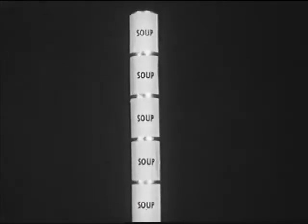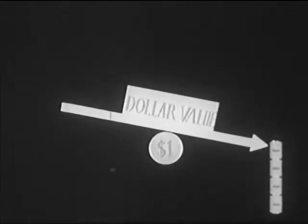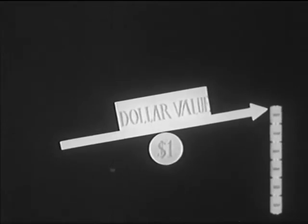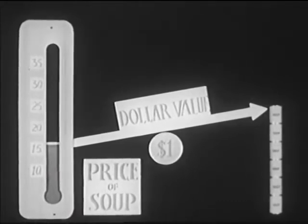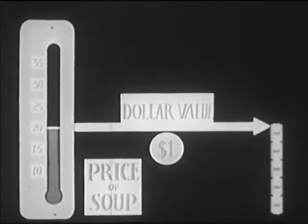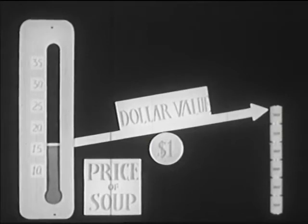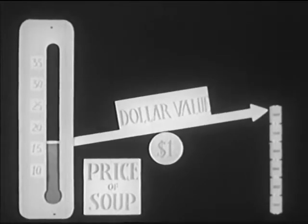Let's say that one dollar will buy five cans of soup — we can think of the value of a dollar as five cans of soup. Another day, if a dollar will buy only four cans, its value has gone down. When it will buy six cans, the value of the dollar has gone up. Thus, as the price goes up, what the dollar will buy goes down; and as the price goes down, what the dollar will buy goes up. So we say the value of the dollar is inversely related to prices.